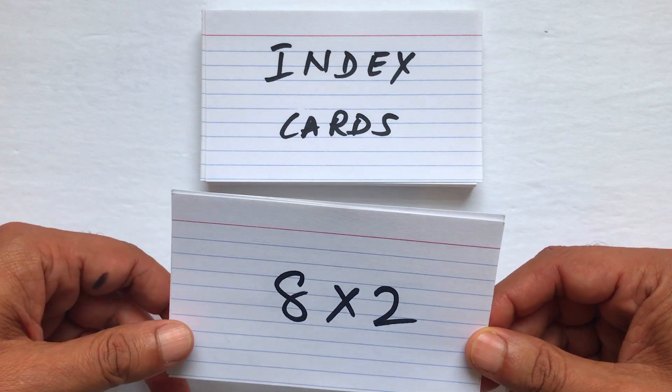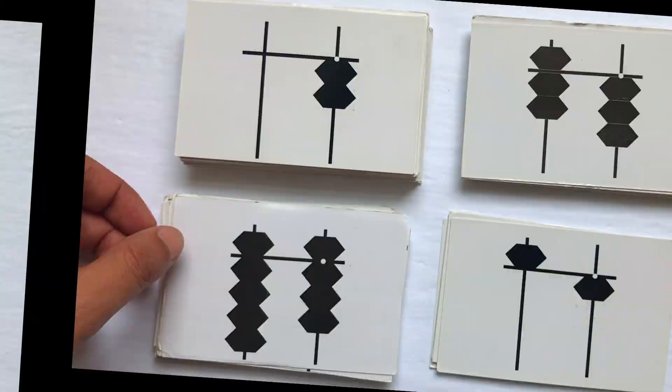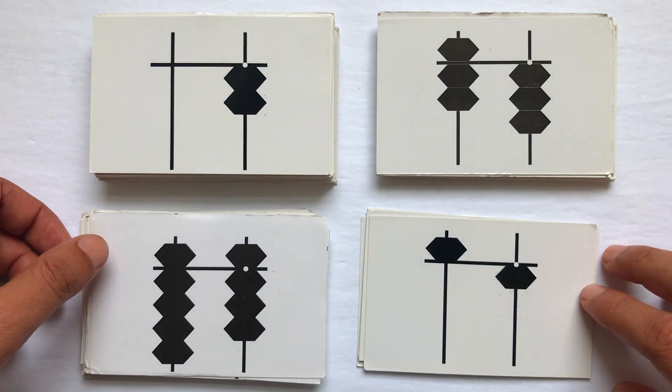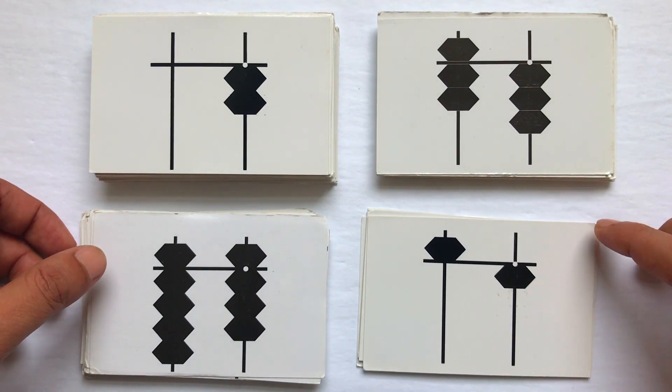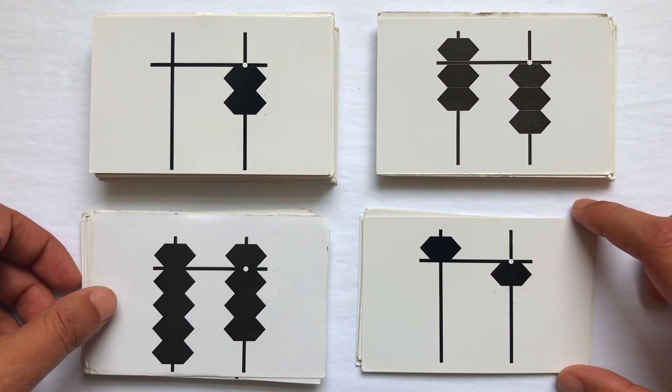So we ordered them online, and this is what we received: a deck of cards showing bead positions for each number 0 to 99. If you're not familiar with how to read numbers on the abacus, check out one of our other videos where we teach that concept.